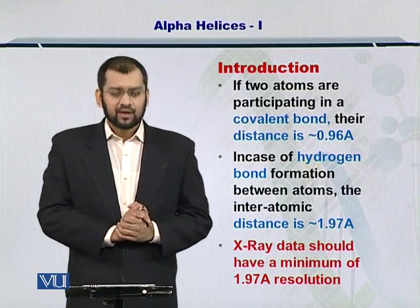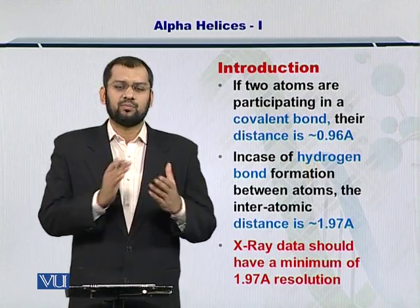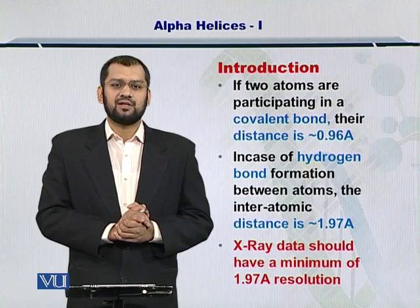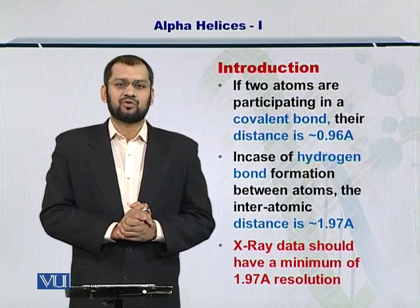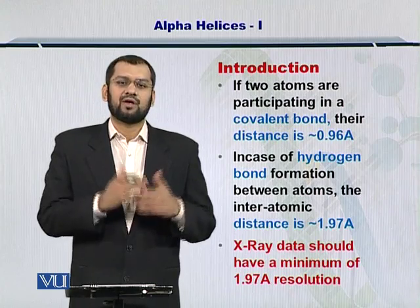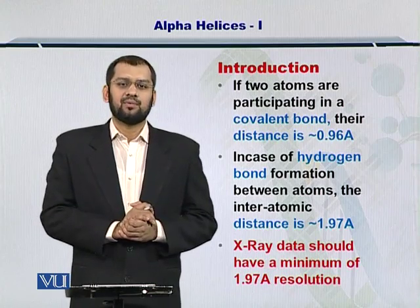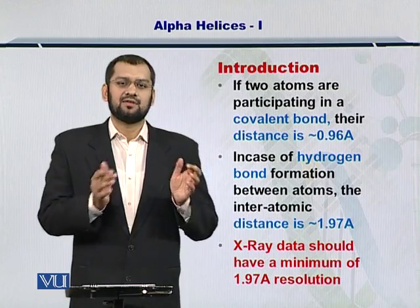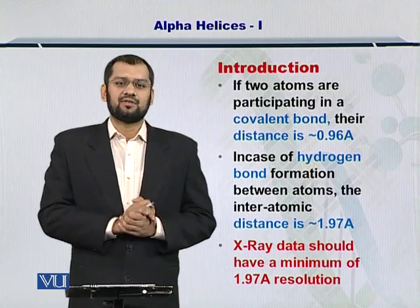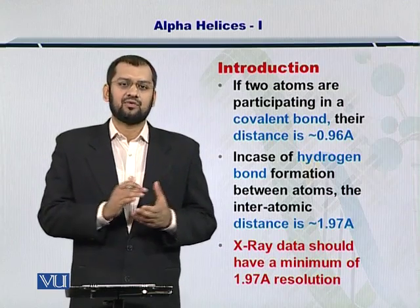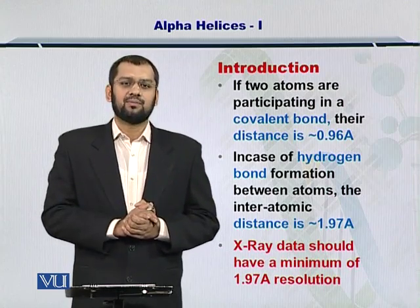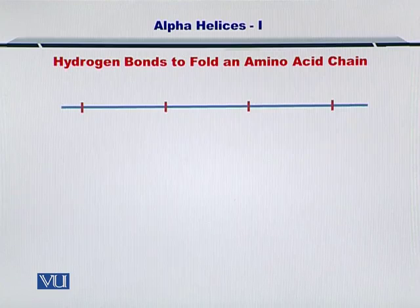Hence, the X-ray data that you obtain from X-ray crystallography must have at least 1.97 Angstrom resolution, because otherwise you will not be able to differentiate between atoms that are at distances less than 1.97 Angstroms, and therefore you will not be able to detect hydrogen bonding.